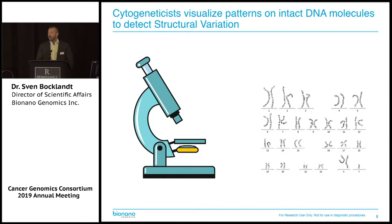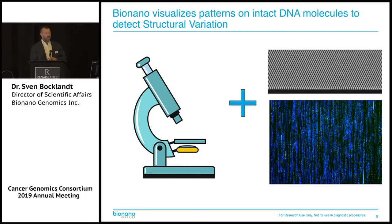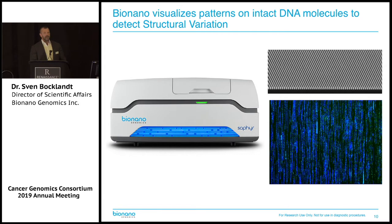What BioNano does is really the same thing — we use a microscope to look at patterns on intact DNA molecules. But we add a nanochannel array: hundreds of thousands of channels so narrow that a single DNA molecule fits inside. We put a pattern on these molecules that are megabases in length — think about the banding of the karyotype, but with 500 million bands in the genome. We take these megabase-sized molecules, pull them into these channels, and image them massively in parallel. Our microscope is called Sapphire. It's automated and beautiful.